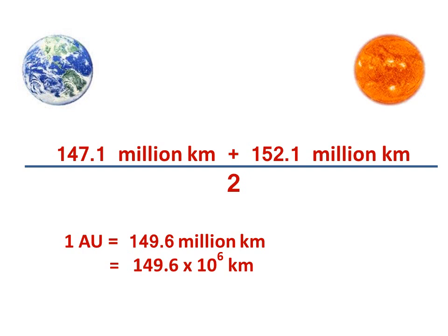Therefore, one AU (astronomical unit) is equal to 149.6 million kilometers, also written as 149.6 × 10^6 kilometers.